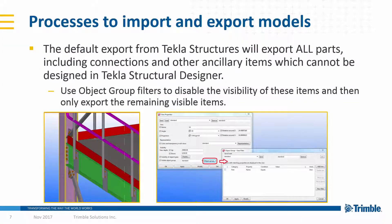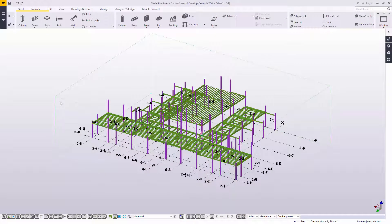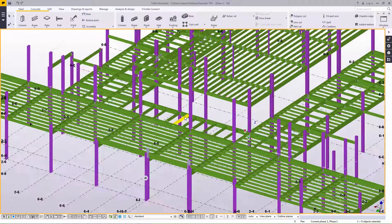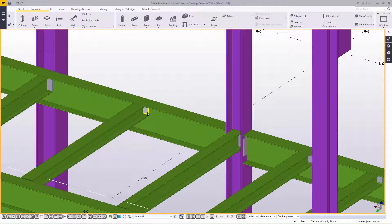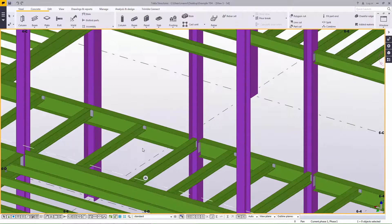The default export from Tekla Structures will export all parts, including connections and other ancillary items which cannot be designed in Tekla Structural Designer. An alternative option is to select everything visible on the screen and export selected items only. The Tekla Structures user can use Object Group filters to disable the visibility of any item which is not analytically significant, and choose to export only the remaining visible items. This is our example of a fully detailed floor grillage with end plates, cleats and bolts all fully visible — as such, the plated parts will all be exported to Tekla Structural Designer by default. To avoid this, we will remove them from the view and then export only the remaining visible items.